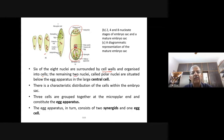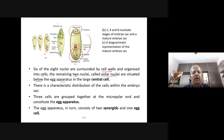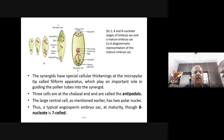The remaining two nuclei, called polar nuclei, are situated below the egg apparatus. The egg apparatus consists of one egg cell and two synergies. The synergies and this egg cell together form the egg apparatus, and below the egg apparatus you have the two polar nuclei.